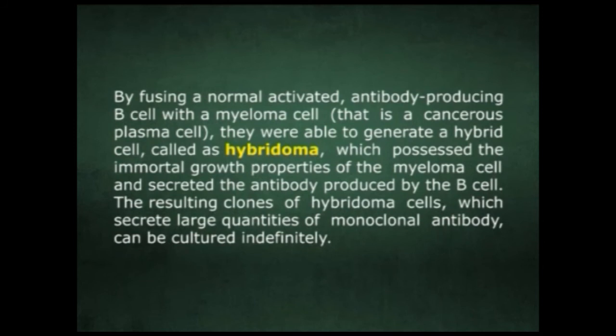By fusing a normal activated antibody-producing B cell with a myeloma cell — a cancerous plasma cell — they were able to generate a hybrid cell called a hybridoma, which possessed the immortal growth properties of the myeloma cell and secreted the antibody produced by the B cell. The resulting clones of hybridoma cells, which secrete large quantities of monoclonal antibody, can be cultured indefinitely.